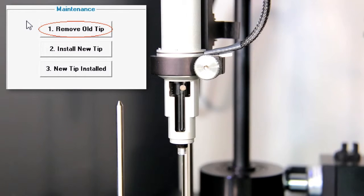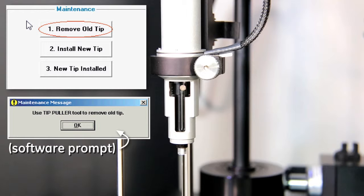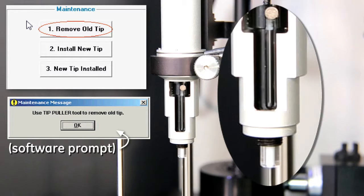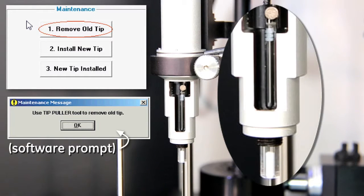Then we click the remove old tip button in the ITC 200 software's instrument controls tab. This prompts you to remove the old tip, which we're not doing in this step, but the action of the plunger aids in removal of the syringe glass.